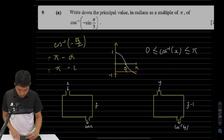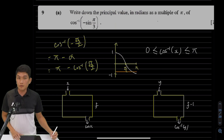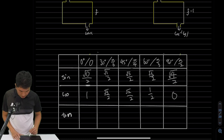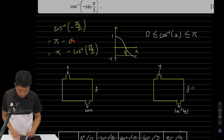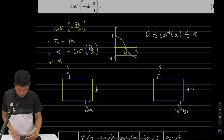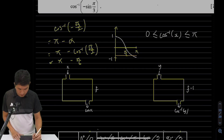To work out the reference angle, in the second quadrant the answer is π minus the reference angle. The reference angle is cosine inverse of the positive version, √3/2, which equals π/6. So the total angle is π minus π/6, giving the answer of 5π/6. That is the answer for question 9a.